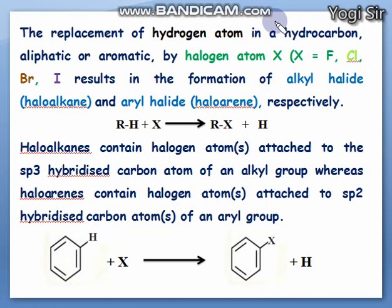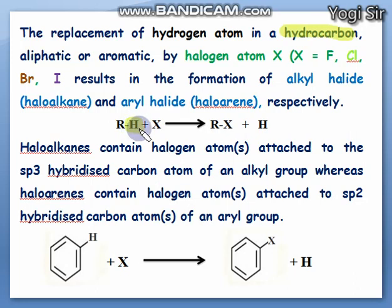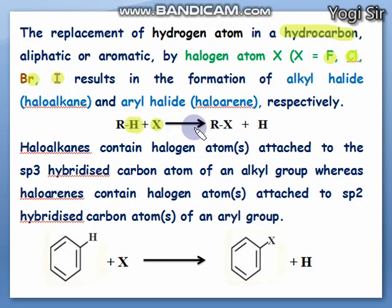Most of these haloalkane compounds and haloarenes are synthetic compounds — they are rarely present in nature. They are synthesized mostly from hydrocarbons by a simple reaction where you just displace or substitute a hydrogen atom of a hydrocarbon with any halogen atom, where the halogen can be fluorine, bromine, or iodine. This produces the compound known as alkyl halide.